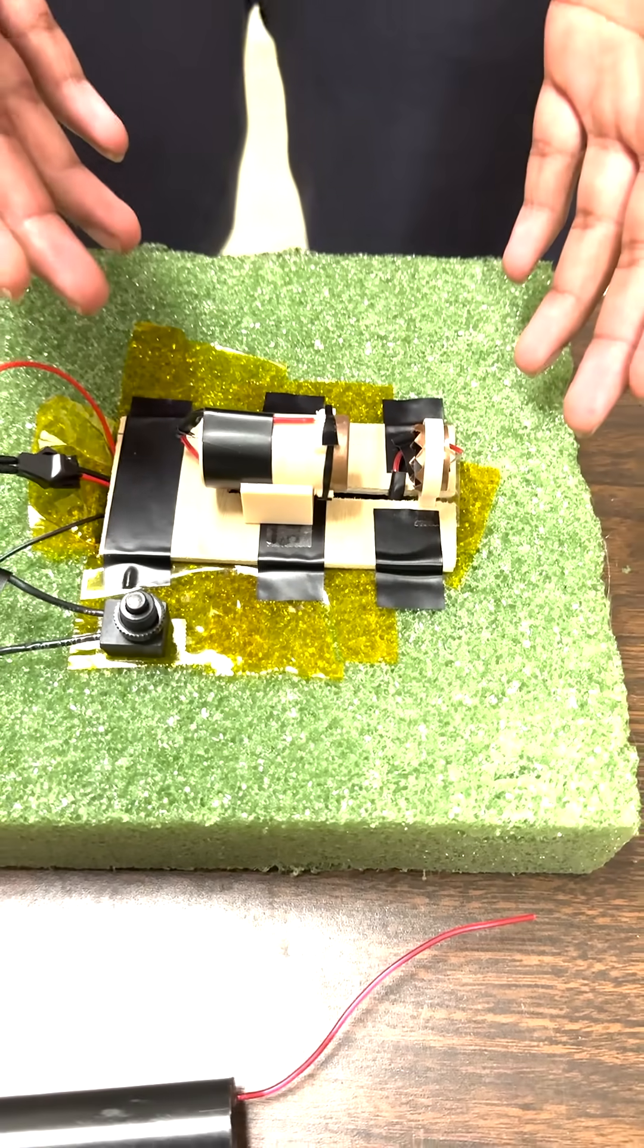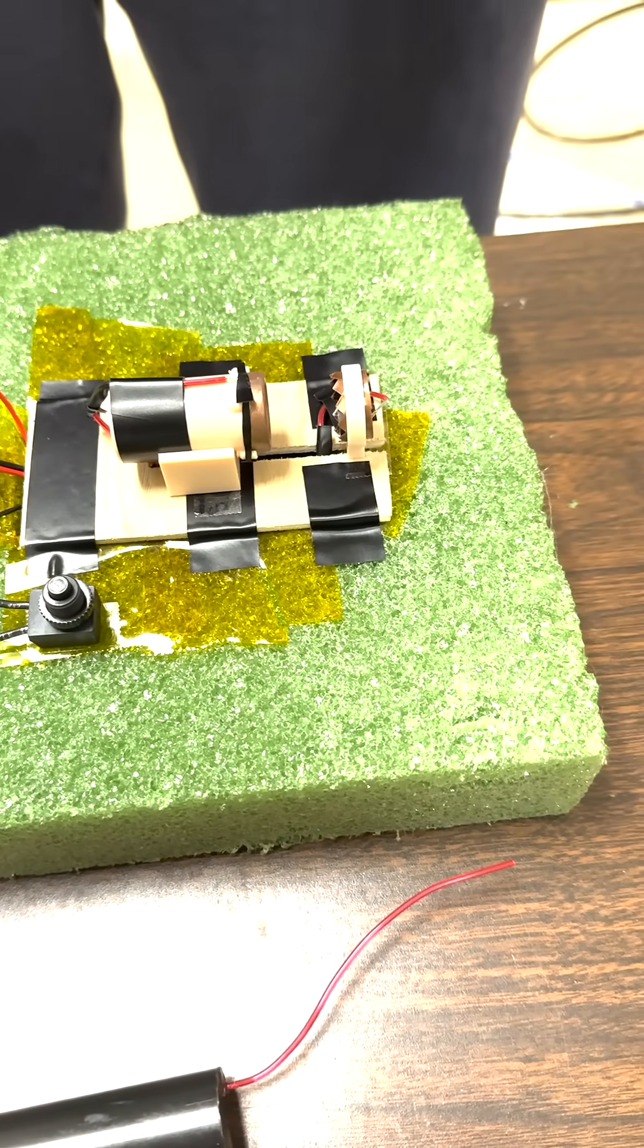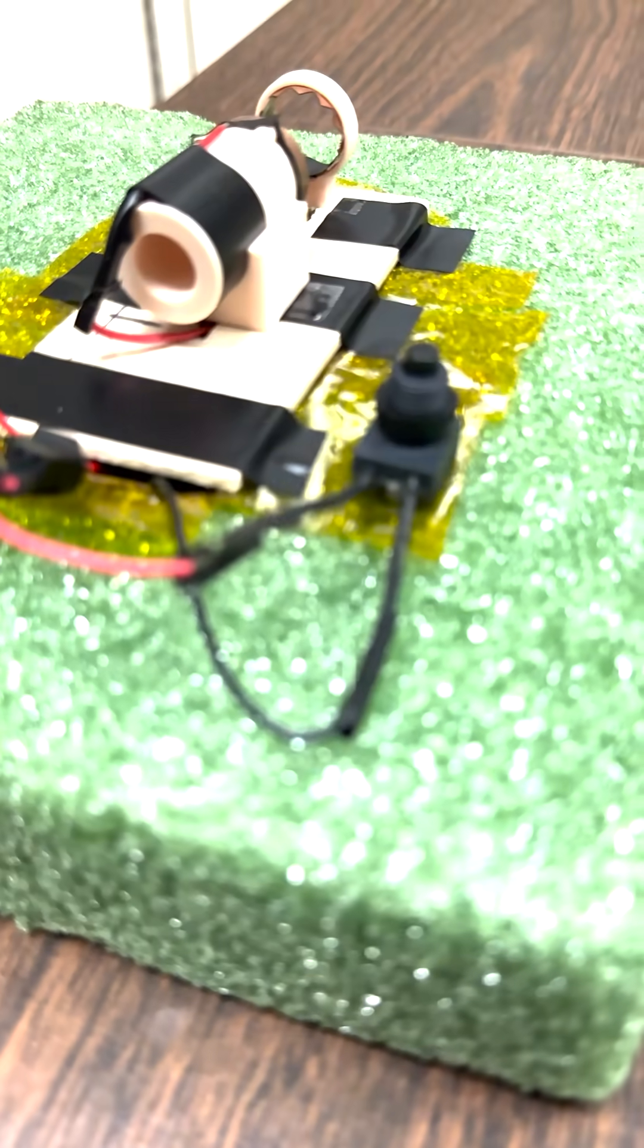So here on the surface we have the actual thruster with the transformer and the battery hidden inside under this wooden plate.